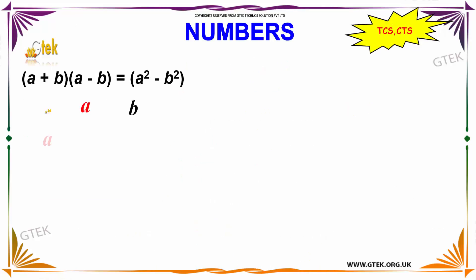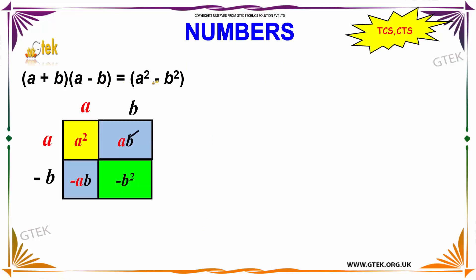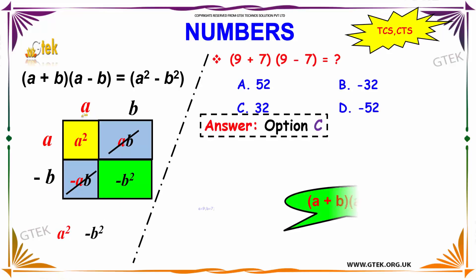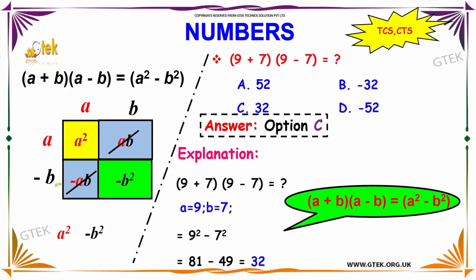Now we'll talk about a plus b into a minus b. Expanding: a into a, a into b, minus b into a, and minus b into b. The plus ab and minus ab cancel out. We get a square minus b square.